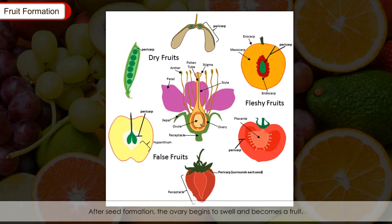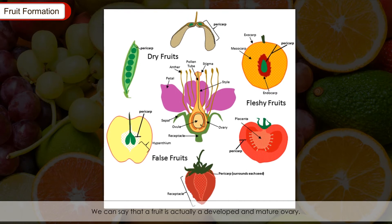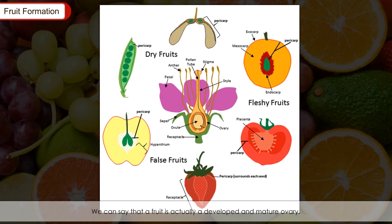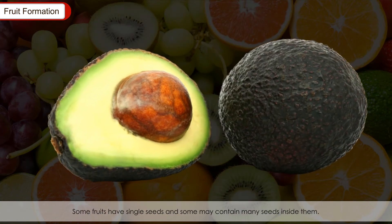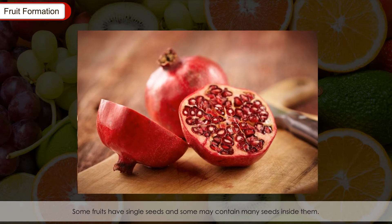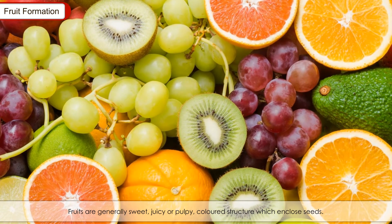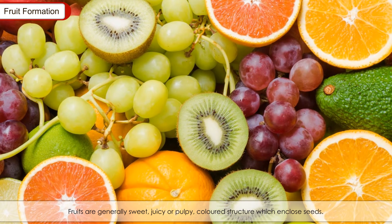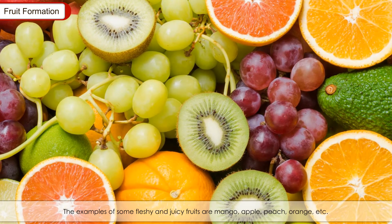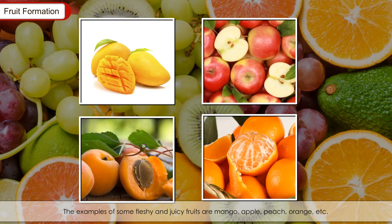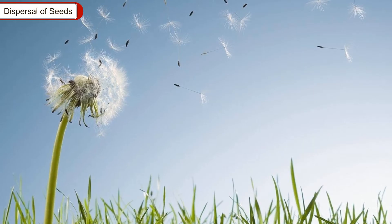Fruit Formation: After seed formation, the ovary begins to swell and becomes a fruit. A fruit is actually a developed and mature ovary. Some fruits have single seeds and some may contain many seeds. Fruits are generally sweet, juicy or pulpy, coloured structures that enclose seeds. Examples of fleshy and juicy fruits are mango, apple, peach and orange. Some fruits have hard and woody shells, such as almonds and walnuts.